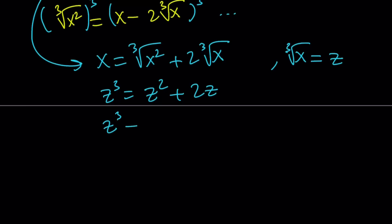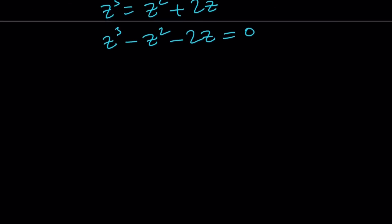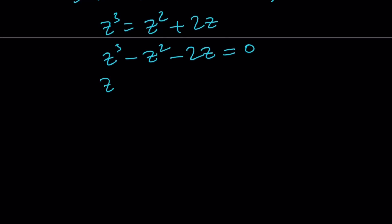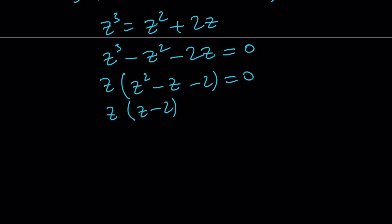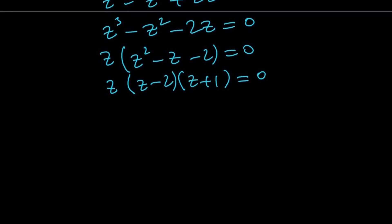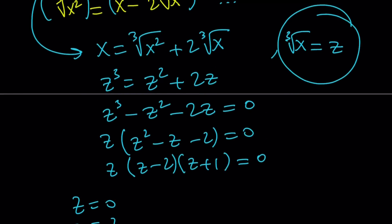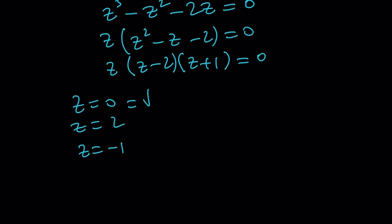Putting everything on the same side: z cubed minus z squared minus 2z equals 0. Take out a z: z squared minus z minus 2 equals 0. This quadratic is factorable: z minus 2 times z plus 1 equals 0. Or use the quadratic formula if you want. From here we get three values for z: z equals 0, z equals 2, and z equals negative 1. Remember, z is cube root of x, so let's set each one equal to cube root of x.